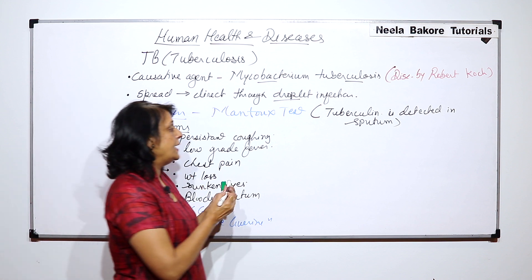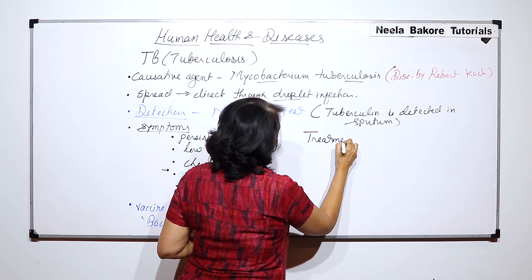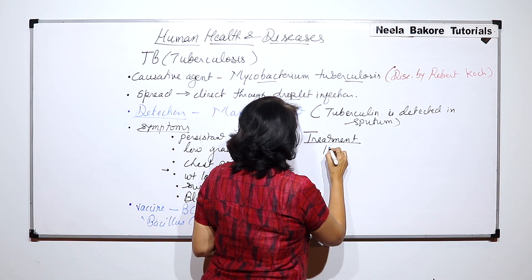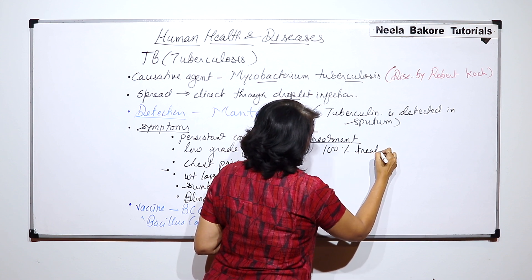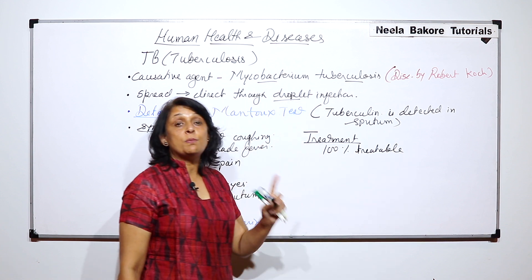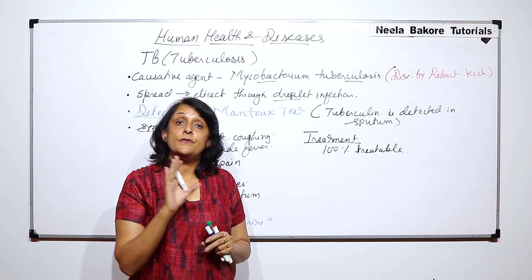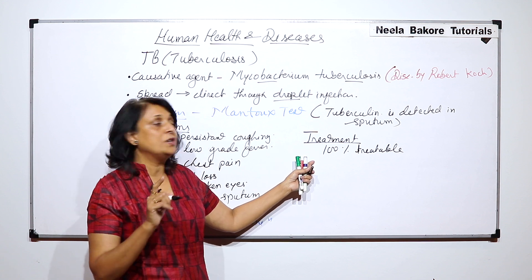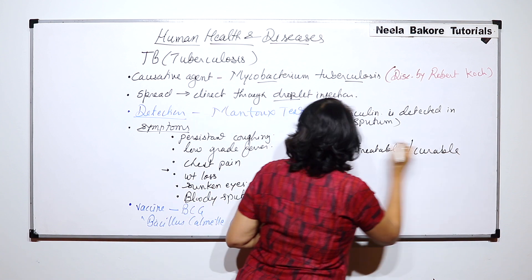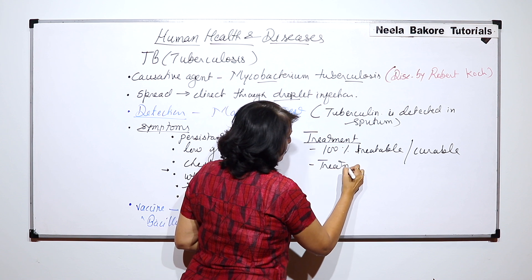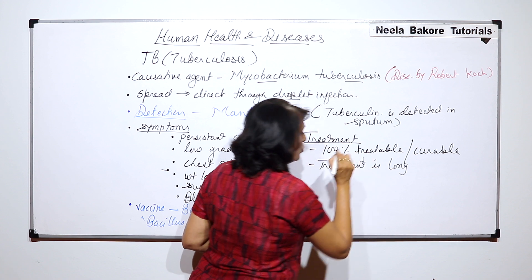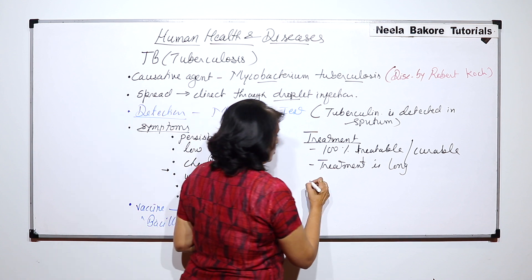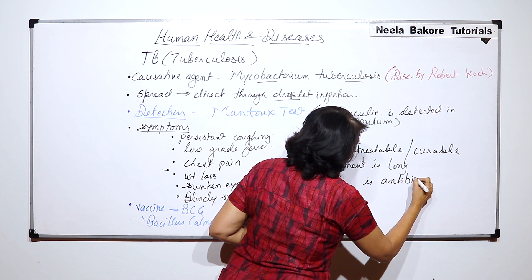If we talk about the treatment, tuberculosis is 100% treatable — 100%. The only thing is that the treatment is long; it takes almost one and a half to two years because it is a chronic infection. But it is 100% treatable and curable. Treatment is long and includes antibiotics, which are very effective on bacterial diseases, so treatment is mainly antibiotics.